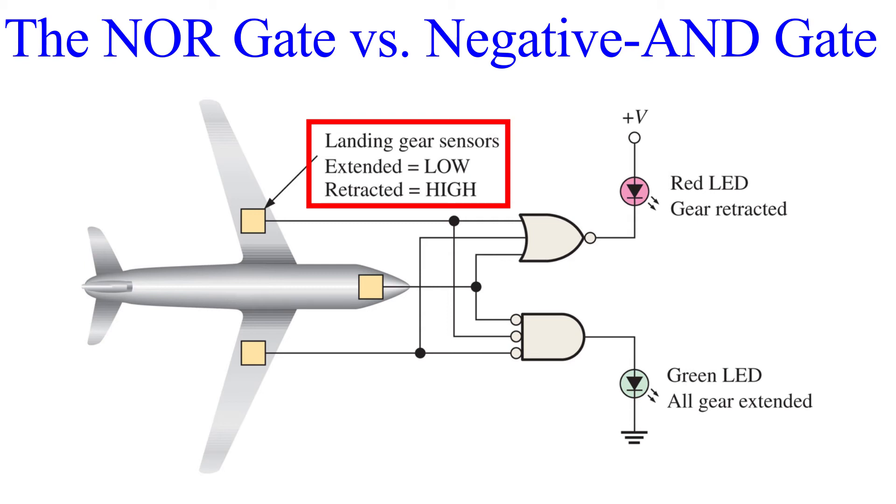Here's how we implement the NOR and the negative AND to make this system function properly. When the gear is retracted, the sensors output a high signal. The NOR gate will output a low and the red LED will be turned on, indicating that the gears are retracted. This may seem counterintuitive, but remember that the bubble on the output means that the gate is active when in low. Therefore, the red LED is active in this state.